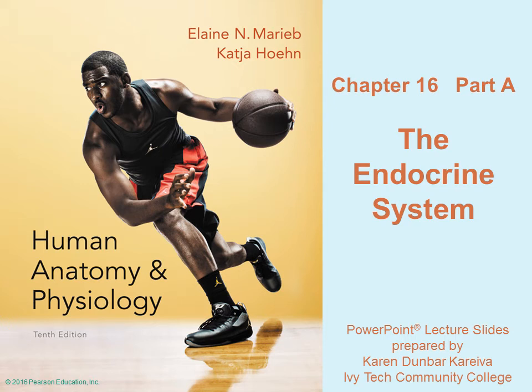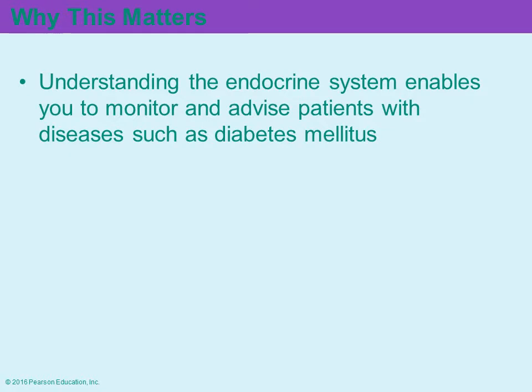Chapter 16 deals with the endocrine system. The endocrine system is one of the communication systems within the body and deals with the secretion of hormones. Understanding that allows you to understand when there are abnormalities that happen.